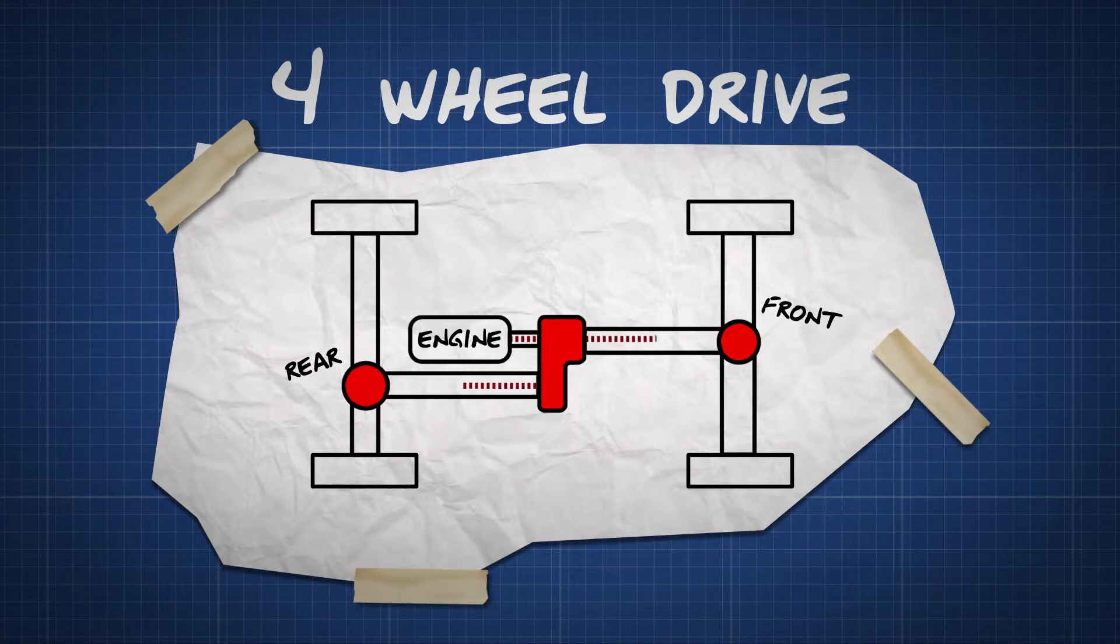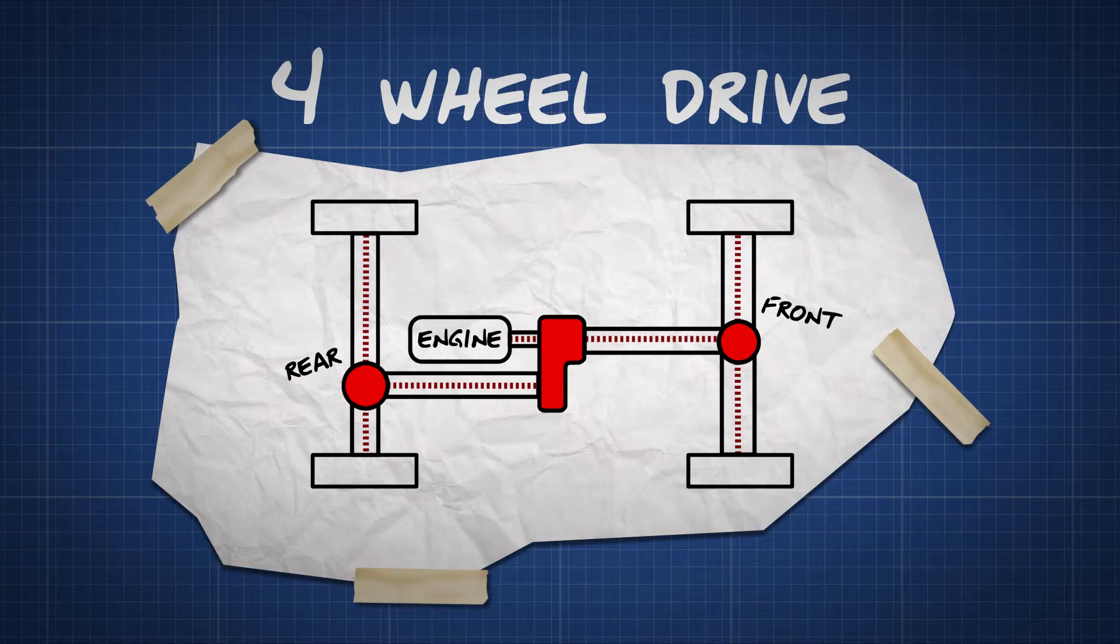Four-wheel drive systems allow your engine to distribute torque evenly to all four wheels. This gives you more control over your vehicle and a smoother drive on different types of driving surfaces.